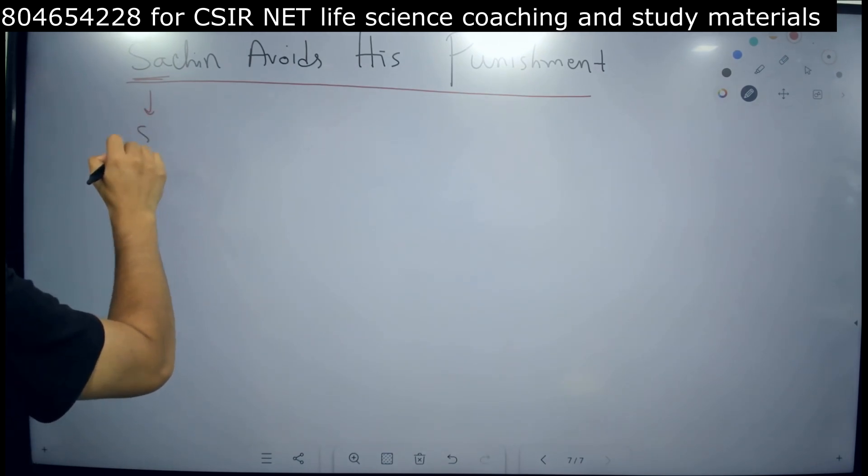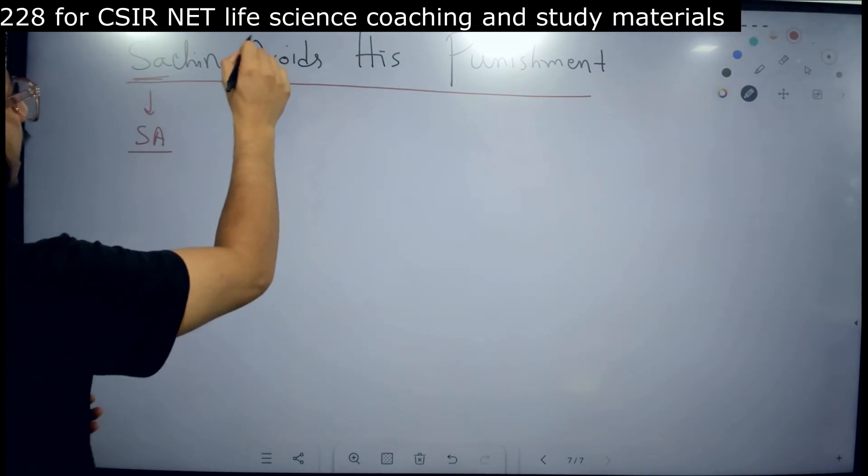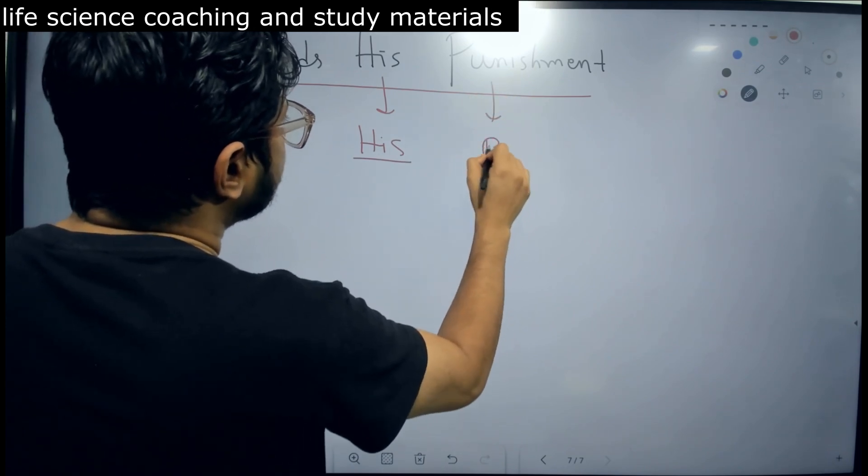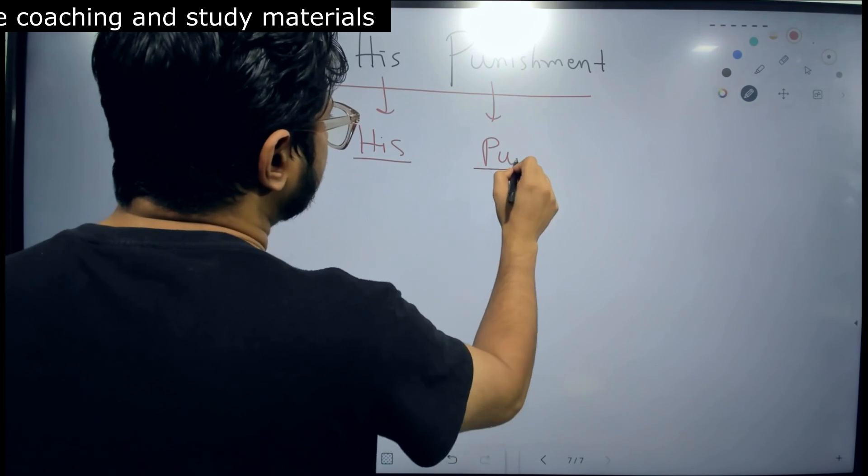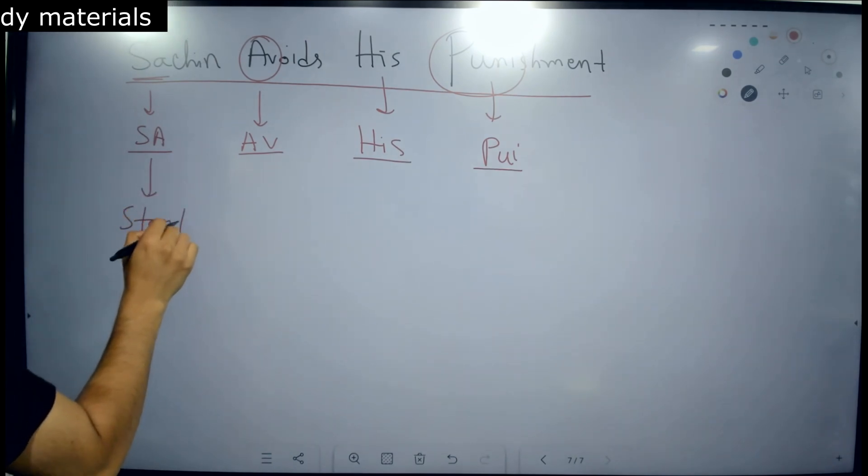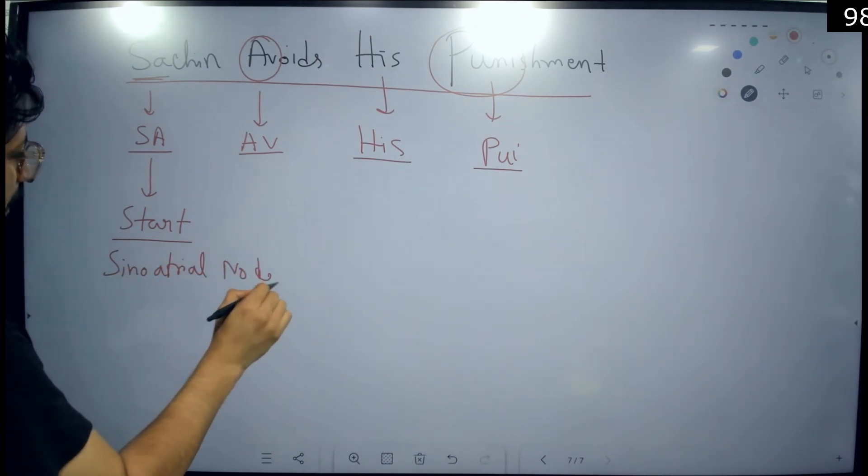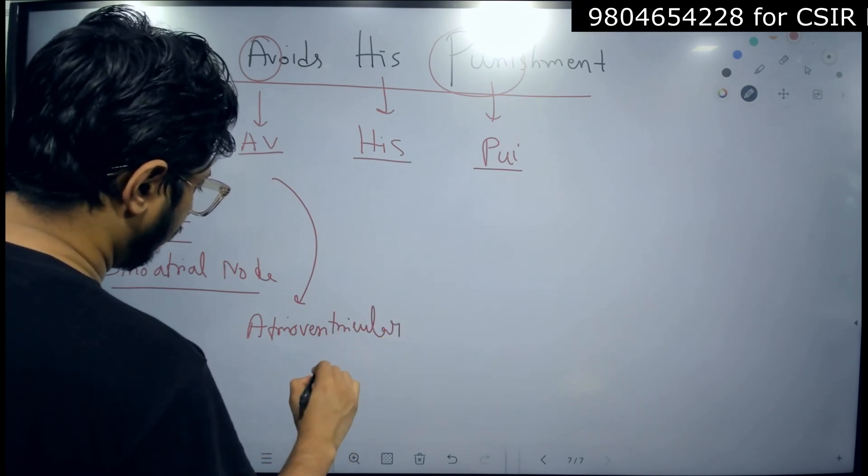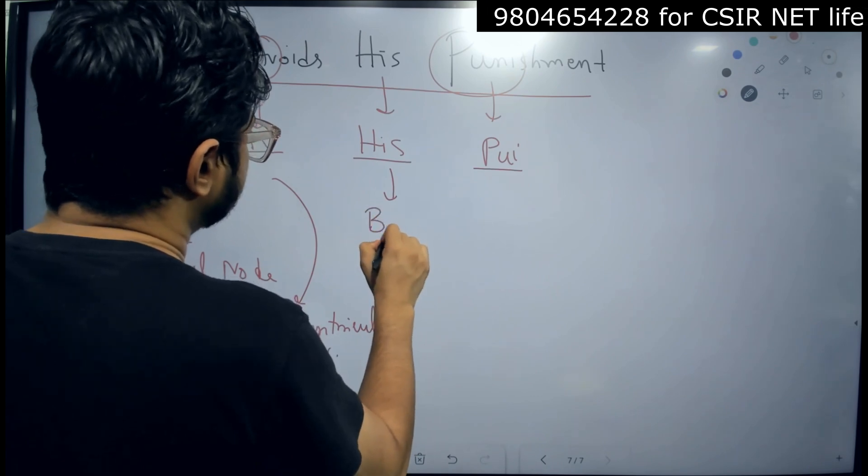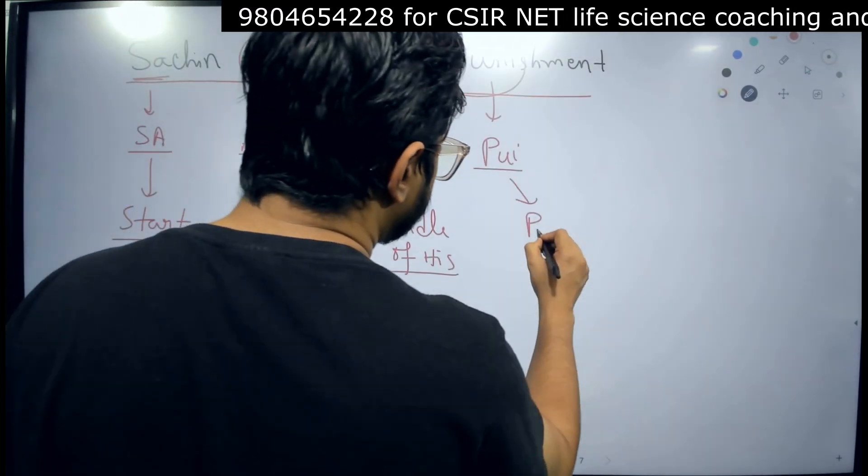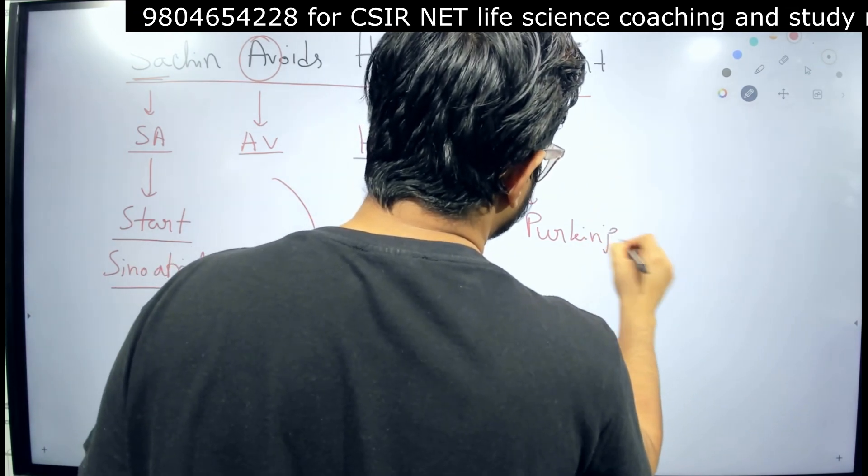How to remember? Sachin starts with SA. Got it? Avoids AV. His, Bundle of His. And punishment PU. Purkinje fiber. Punishment actually PI. That is Purkinje fiber. So, starting. This is the start point. Sino-atrial node. Then AV node. Sino-atrial node to atrioventricular node. Then bundle of His. And lastly, Purkinje fiber.